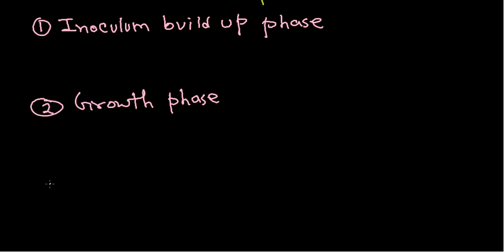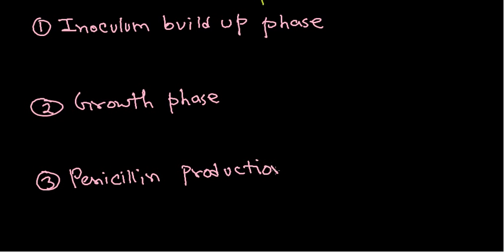Finally, the third phase is called the penicillin production phase — this is when penicillin will be produced. So those are the three different phases. For the inoculum buildup phase, we need to prepare the culture used as the strain to develop penicillin, and we rely on Penicillium chrysogenum as that strain.